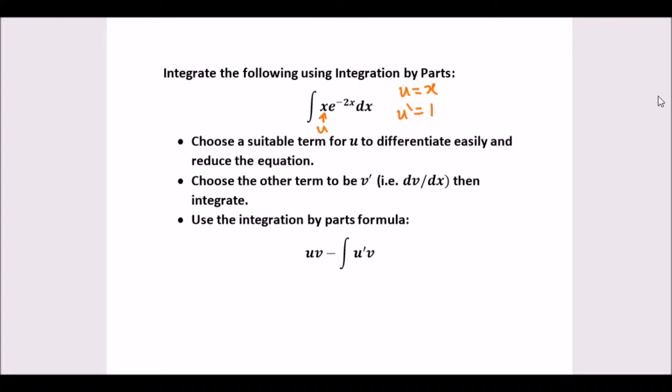Next we need to choose the other term v prime. In other words, this has to automatically be assigned v prime. So v prime equals e to the negative 2x. Now integrating this to get v, we have to integrate e to negative 2x. We look at its power, differentiating from underneath, so v equals e to negative 2x over negative 2.